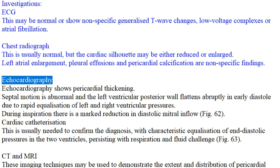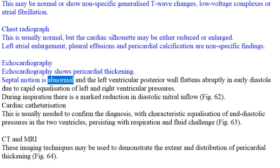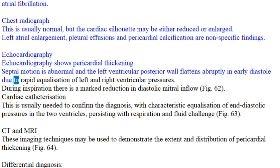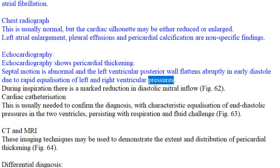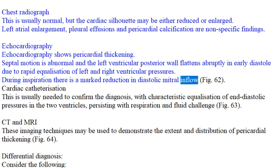Echocardiography shows pericardial thickening. Septal motion is abnormal and the left ventricular posterior wall flattens abruptly in early diastole due to rapid equalization of left and right ventricular pressures. During inspiration there is a marked reduction in diastolic mitral inflow.